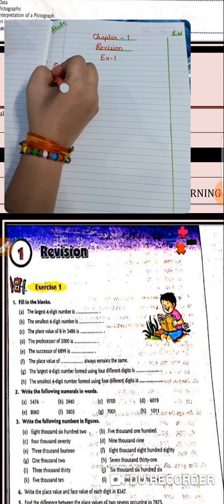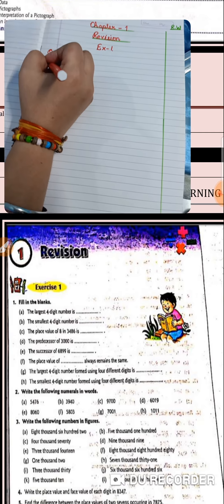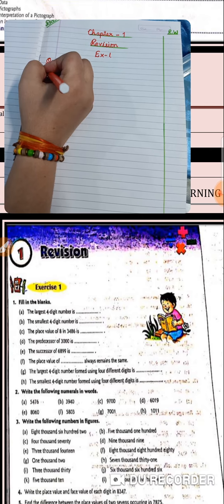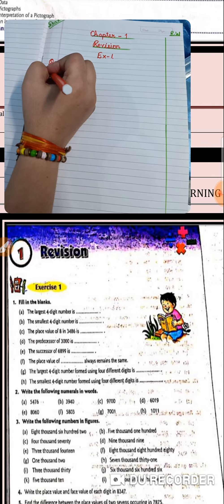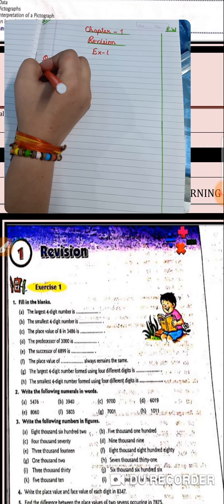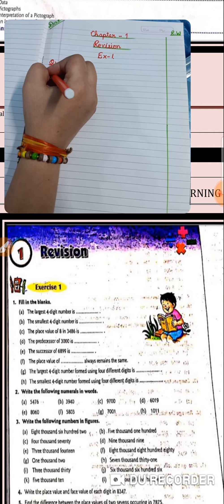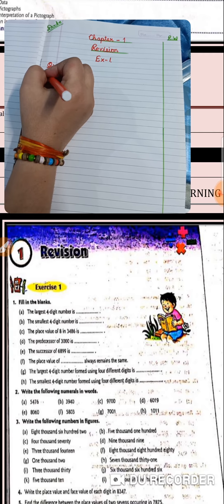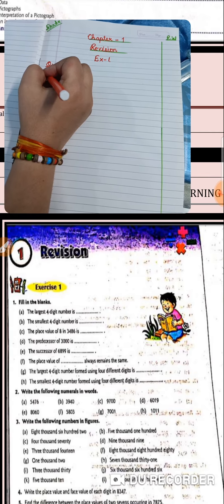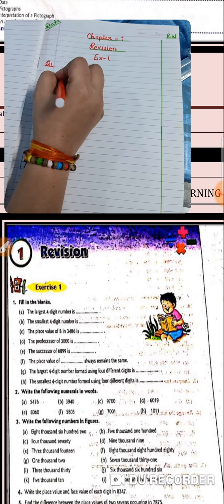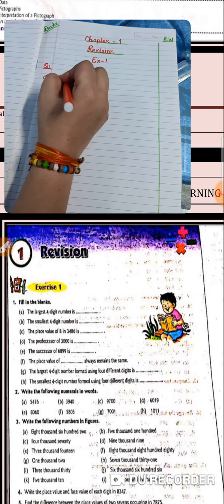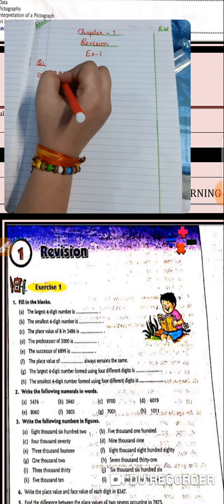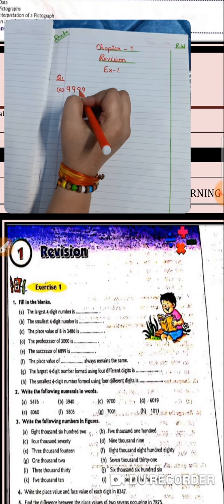Part A: the largest 4-digit number is blank. As you all know that the largest digit is 9, so you have to write the largest 4-digit number. It will be 4 nines — so 9999 is the largest 4-digit number.